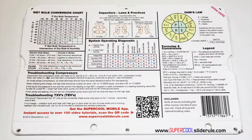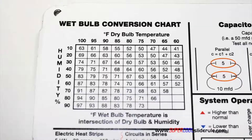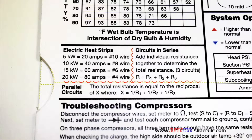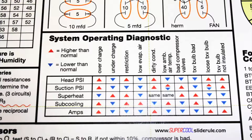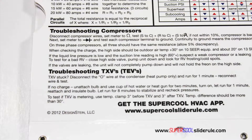The back cover contains required formulas, capacitor rules and practices, a wet bulb conversion chart, how to perform computations on series or parallel circuits, an electric heat strip guide, a complete system troubleshooting diagnostic chart, and how to troubleshoot compressors and TXV.